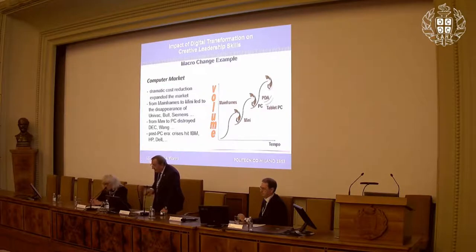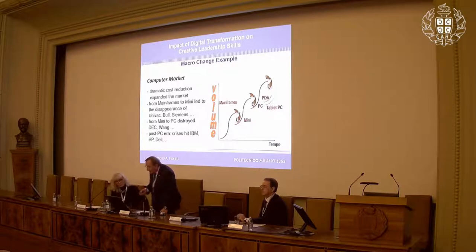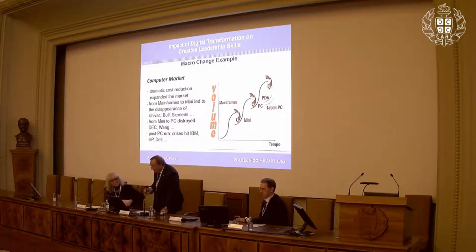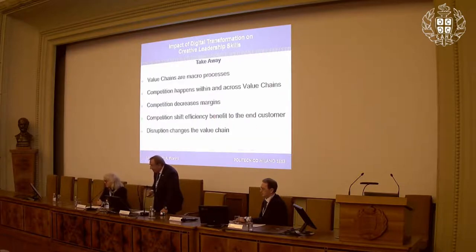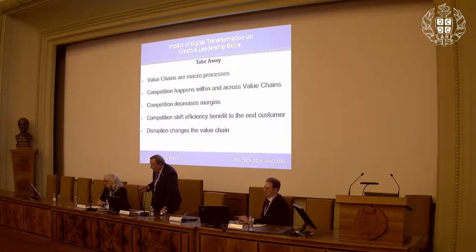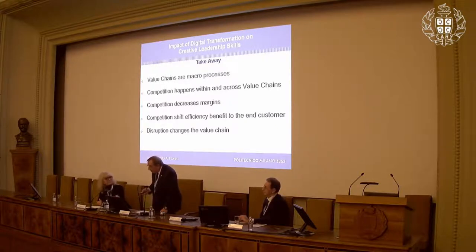A clear example is computer marketing: dramatic cost reduction expanded the market. From mainframes to mini led to the disappearance of Univac, Siemens, and others. From mini to PC destroyed DEC, VANC, and so on. The post-PC era caused crises at IBM, HP, and Dell. Takeaway: value chains are macro processes; competition within a cross-value chain decreases margins; competition shifts efficiency benefits to the end consumer. Disrupt and change the value chain.